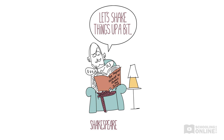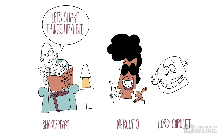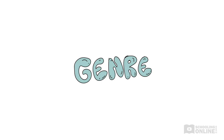He shortened the plot's time frame to make the action more intense, and he made characters like Mercutio and Lord Capulet more complex. The finished product has been one of Shakespeare's most popular plays. To understand the play, it's important to understand how Shakespeare engages with genre.